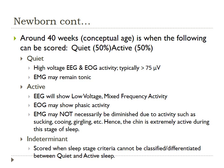Around 40 weeks conceptual age is when quiet sleep and active sleep can be scored. Quiet sleep shows high-voltage EEG and EOG activity, typically greater than 75 microvolts, with the EMG remaining tonic. Active sleep shows low-voltage mixed-frequency EEG activity, with the EOG possibly showing phasic activity, and the EMG may not be diminished due to activities such as sucking, cooing, or gurgling — the chin is extremely active. Indeterminate is scored when the sleep stage cannot be classified or differentiated between quiet and active sleep. For newborns, you can score quiet, active, or indeterminate.